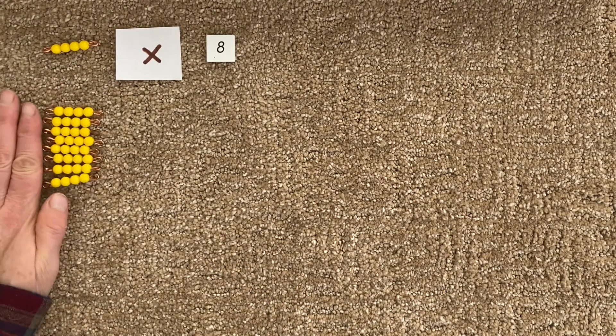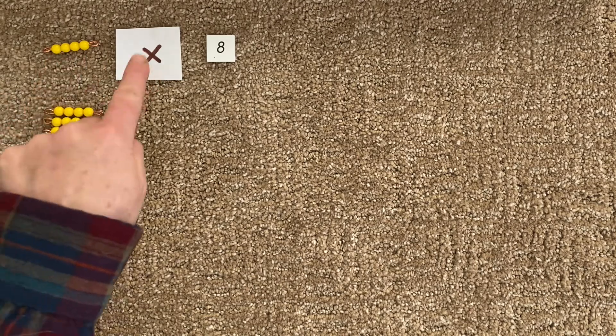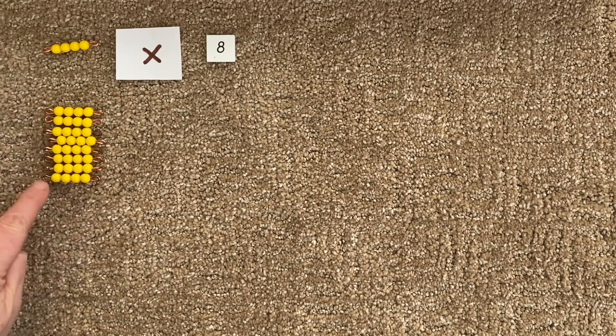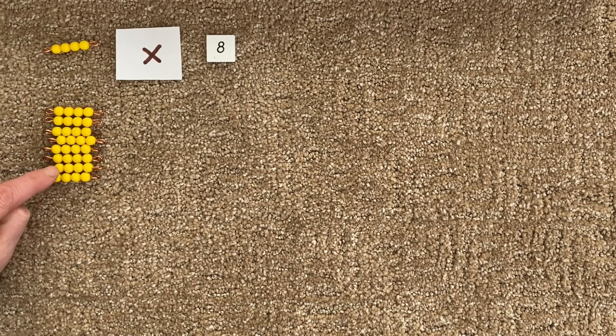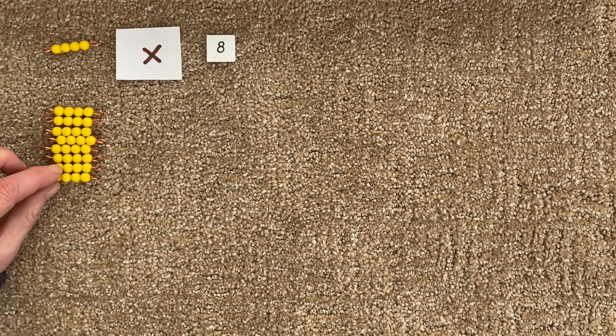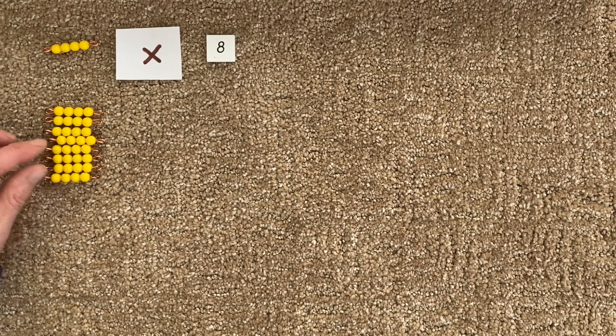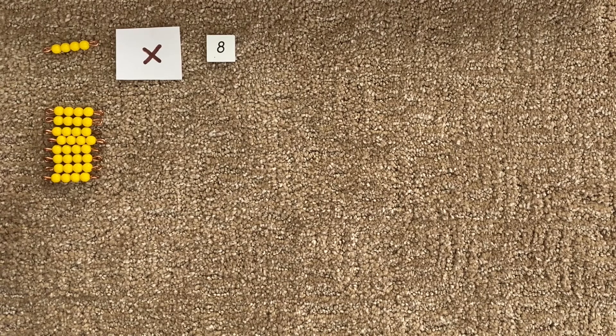Okay, do we remember what four times eight is? You can count all these beads if you don't remember. Four times two is eight. So we'd have eight plus eight. We know that's 16. 16 plus 16 is 32.